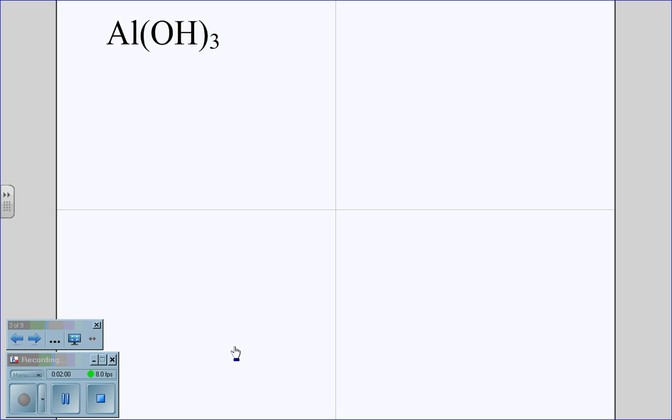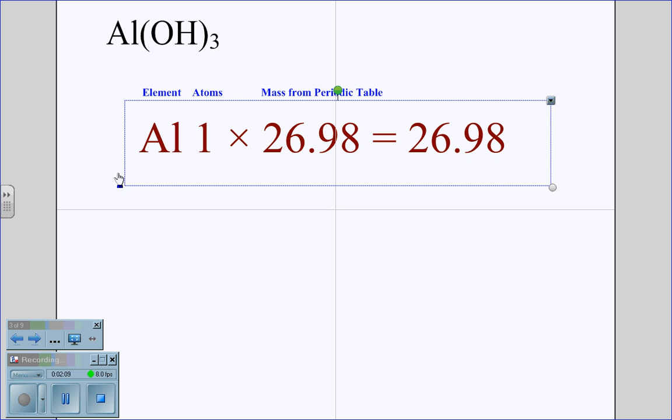Let's try another one. Aluminum hydroxide. In this case, again, we're going to start by listing our information. We have aluminum, which we have one atom of.